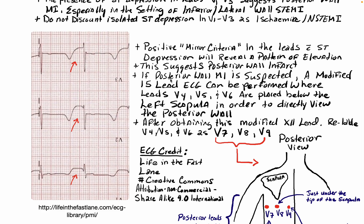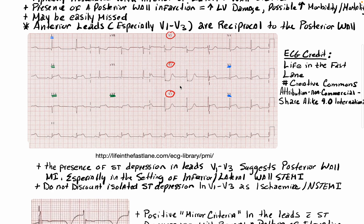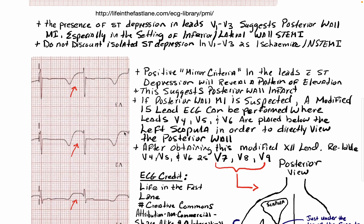Something you can do is use what's referred to as the mirror criteria, where you essentially flip the ECG around and look at it like you're looking at it in a mirror. You can just literally take the ECG and flip it around — and when you do that, it looks more like the classic ST elevation that you see in a STEMI. That flattened appearance of the depression looks more like the classical ST elevation of a STEMI, which suggests posterior wall infarction.